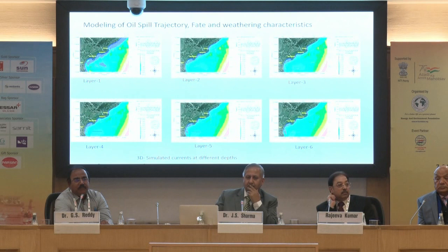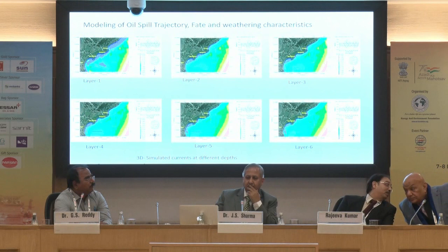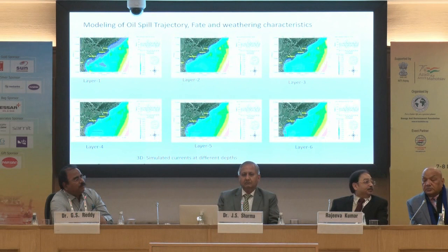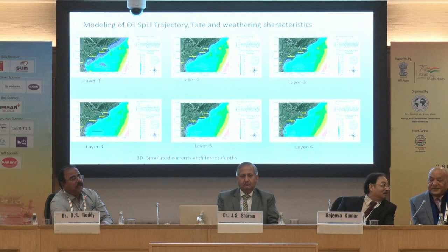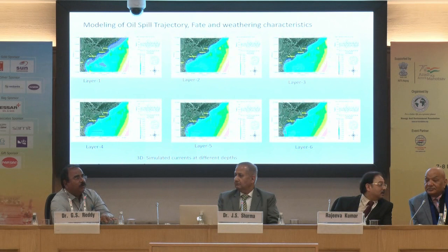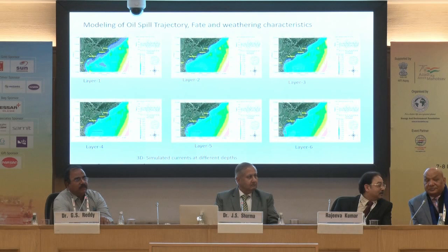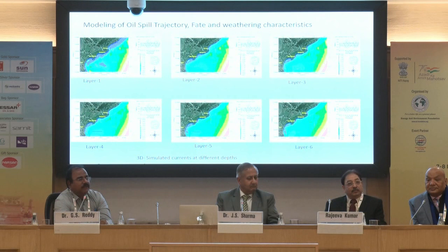For the East Coast, the depth is more than 2,000 metres, so we selected a three-dimensional model. For shallow water — 100 metres or 60 metres — a two-dimensional model is enough. If you go to deep sea, we need the three-dimensional model to predict exactly. For oil spill exploration studies in deep water, if a spill happens there, we have to predict it properly. Layer 1, Layer 2, Layer 3 — different layers selected to show how the currents vary depth-wise.